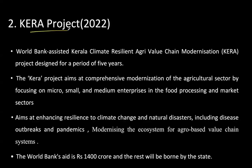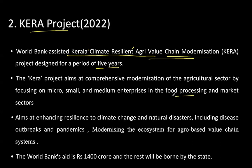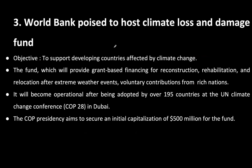An important India-specific project is the World Bank-assisted Kerala Climate Resilient Agricultural Value Chain Modernization Project, designed for a period of five years. It focuses on agricultural value chain modernization while being climate resilient, helping the food processing industry, enhancing resilience to climate change, natural disasters, disease outbreaks, and pandemics, and modernizing the ecosystem for agro-based value chain systems. The World Bank aid is ₹1,400 crores, with the rest borne by the state.